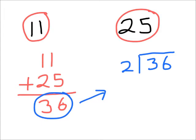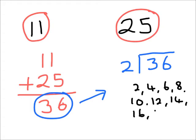Let's do that first. How many twos are in three? If I count my two times tables underneath: two, four, six, eight, ten, twelve, fourteen, sixteen, eighteen, twenty. How many twos are in three? I've got one two in three. One multiplied by two is two, so that leaves me one left over. I carry that one forward into my next column.